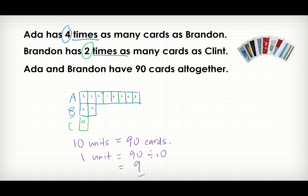One unit is simply 90 divided by 10, which equals 9. Now I can solve any type of question. How many cards does Brandon have? Two times 9 — that is correct. How many cards does Ada have? Eight times 9 — that is correct.